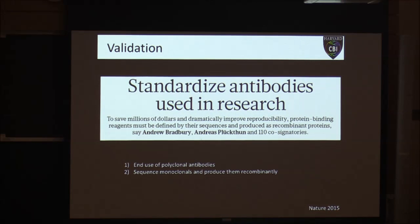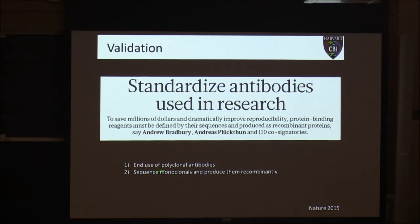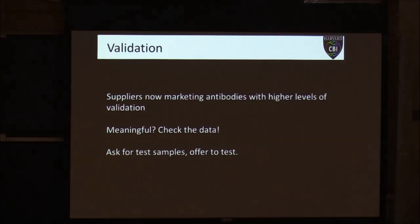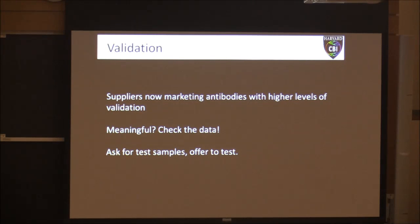Another commentary came out in Nature last year, co-signed by 110 scientists, suggesting we need standardization for antibodies used in research. Oversimplified, there were two key messages: first, let's end the use of polyclonal antibodies; and second, let's sequence the monoclonals and start producing them recombinantly. This is a very interesting proposal — I want to bring it up to show you the concerns that are out there in the community and what people are trying to do to address them.